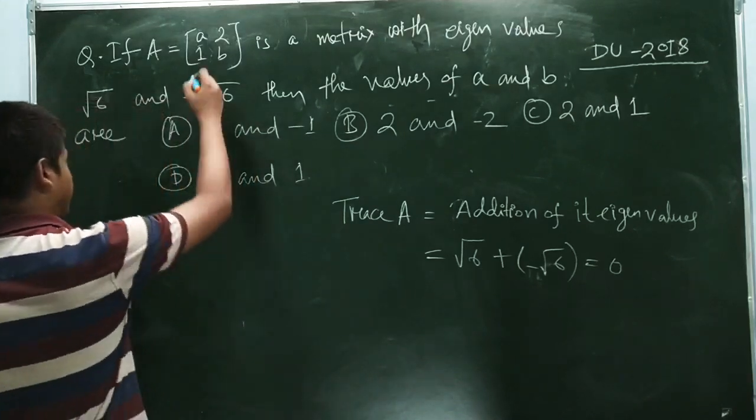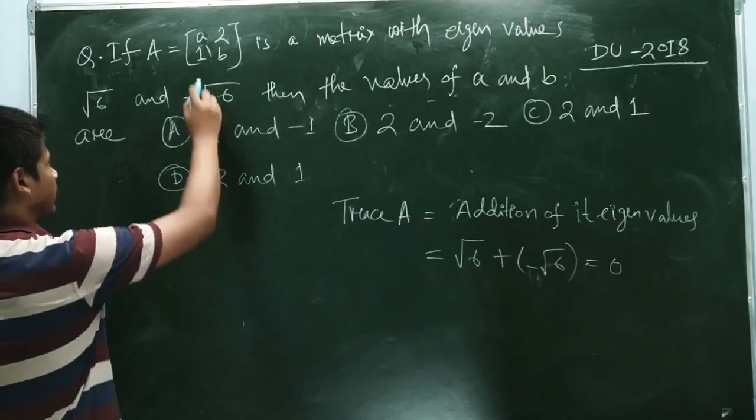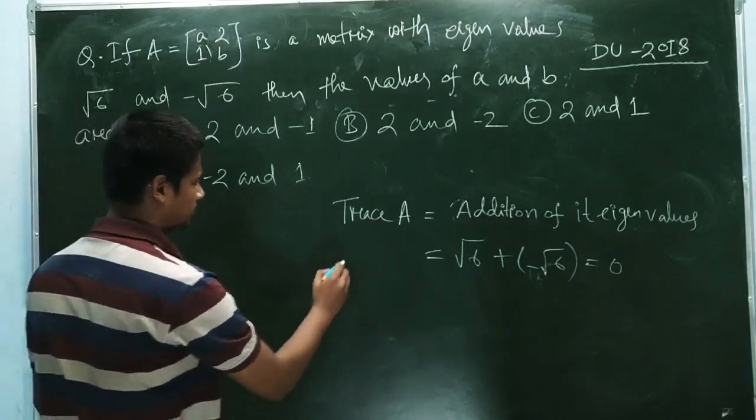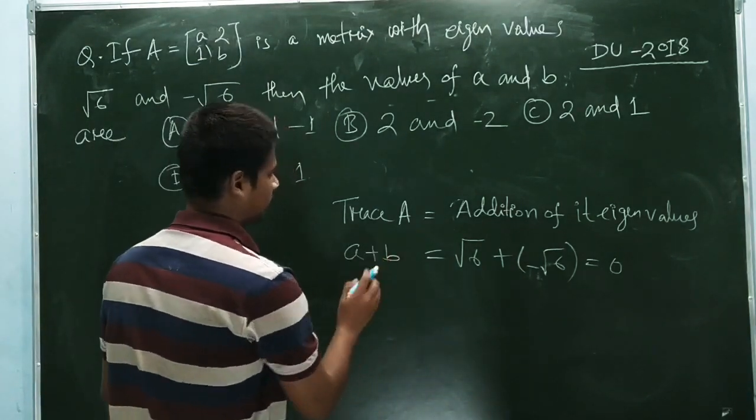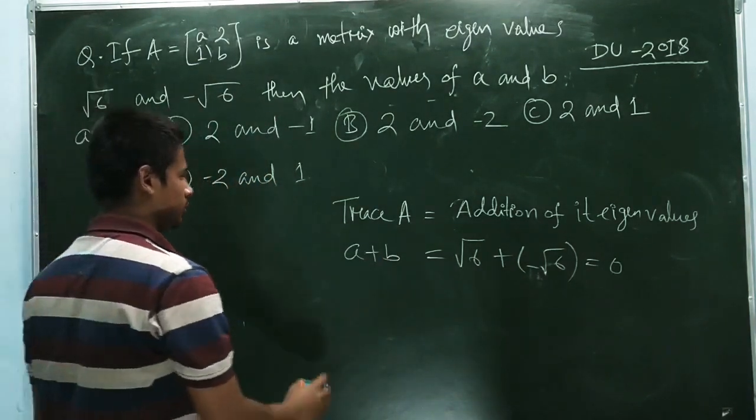And trace of A is the addition of diagonal elements, so a plus b is equal to 0.